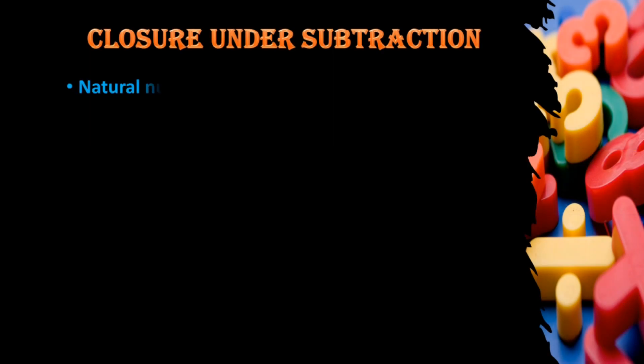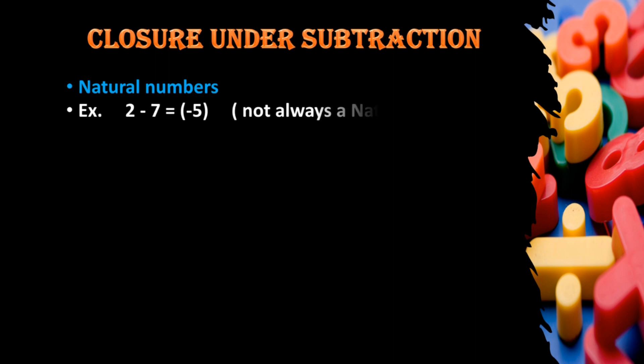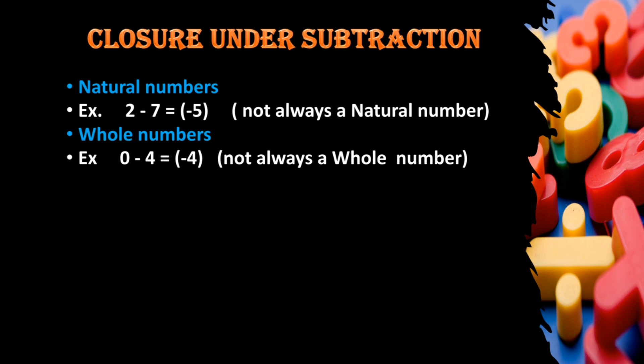Closure under subtraction. For natural numbers, when a natural number is subtracted from another natural number, it is not always the case that we get a natural number. For example, when 7 is subtracted from 2, we get negative 5, and negative 5 does not belong to the natural number set. So natural numbers are not closed under subtraction.